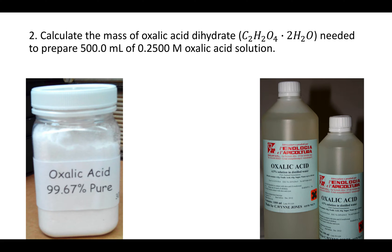Question 2 says calculate the mass of oxalic acid dihydrate needed to prepare 500 mL of 0.25 molar oxalic acid solution. On the bottom left you have solid oxalic acid, and on the bottom right you see what a solution of oxalic acid looks like. Oxalic acid is toxic and it's found in the roots of rhubarb.